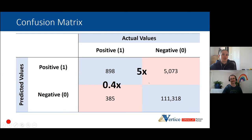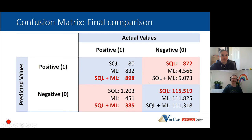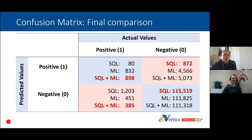If you just went with SQL, the marketers would be happy — we're not wrongly blocking many people. But if you're the Hand of the King trying to stop fraud, then SQL plus machine learning is the one you want. The confusion matrix is really useful to think more deeply about the problem rather than just the overall error rate. A simple accuracy score doesn't drill into the numbers enough to tell the whole story of what's going on under the hood.